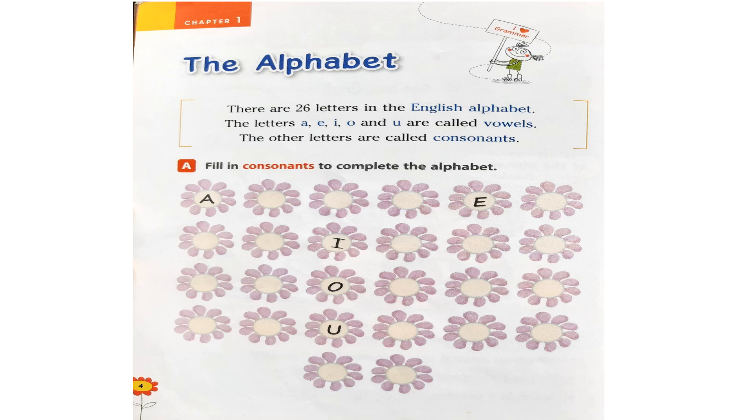Now they have written A, E, I, O, U over there. Now we are supposed to complete the blanks with consonants. Take your pencil and start writing. What will you write after A? Yes, the letter B. Then C, D, F, G, H, J, K, L, M, N, P, Q, R, S, T, V, W, X, Y, Z. Very good.